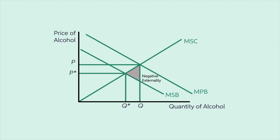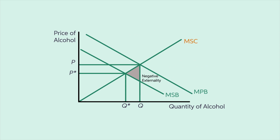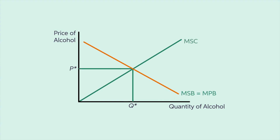Here we can see that MSC shows the marginal social cost and MSB shows the marginal social benefit. The marginal private benefit, MPB, however, is higher than the MSB. The gray triangle shows the deadweight loss due to the negative externality. The government's goal is to lower the MPB so that it aligns with the MSB and offsets the negative externality. To do this, they will place a tax on alcohol, raising the price of alcohol for buyers. Once they do this, the marginal private benefit will go down, getting rid of the negative externality. The MPB line will move down and overlap with the marginal social benefit, so MPB will equal MSB. When this happens, there is no longer a negative externality.